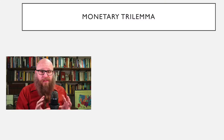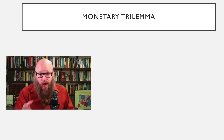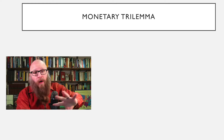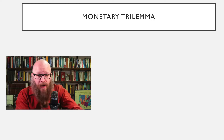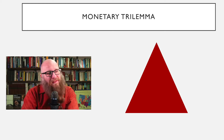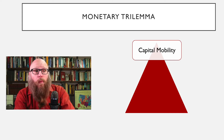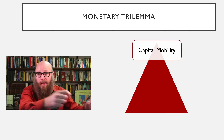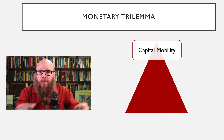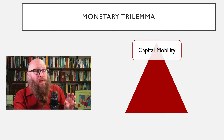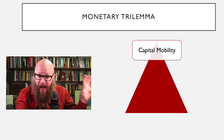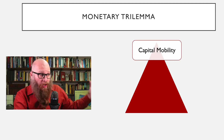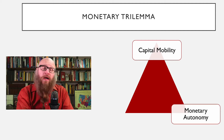A country faces a series of choices on what goals a central bank can achieve. We call this the monetary trilemma, and we have a triangle. Number one, can you have capital mobility? This means can the money move across borders? Can you easily purchase assets in other countries, and can other countries purchase assets in yours?